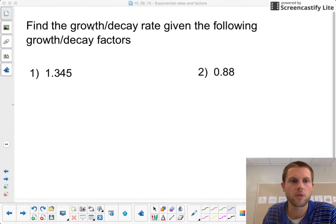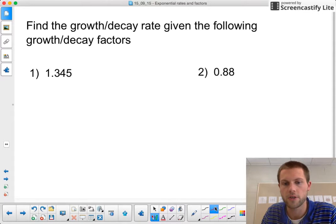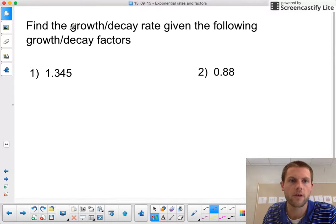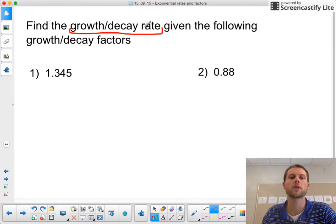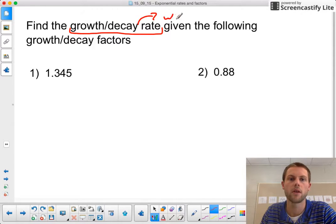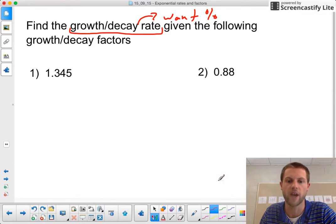Alrighty, let's see what we want to do in this one. We want to go the other direction - we want to start off with a growth factor and find the growth or decay rate. So we're hoping to get a percentage, that's what we're hoping to end with, and we're starting with the factor.